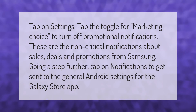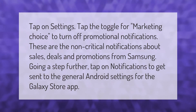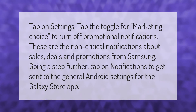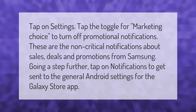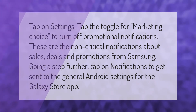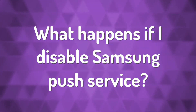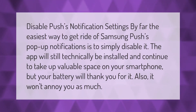Tap on Settings, then tap the toggle for Marketing Choice to turn off promotional notifications. These are the non-critical notifications about sales, deals, and promotions from Samsung. Going a step further, tap on Notifications to get sent to the general Android settings for the Galaxy Store app.